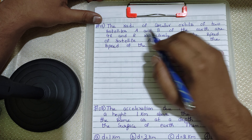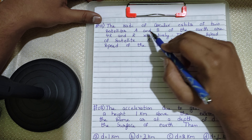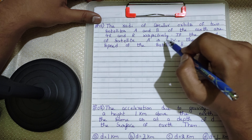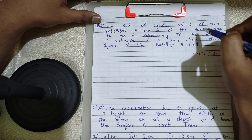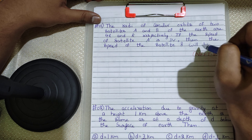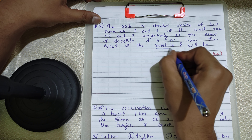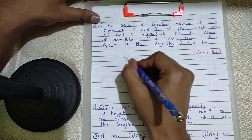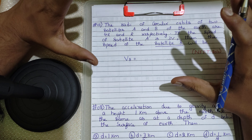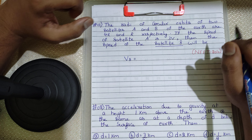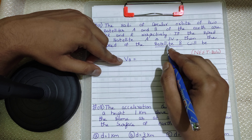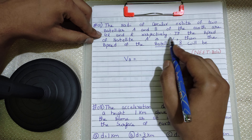The radii of the circular orbits of two satellites A and B of the earth are 4R and R respectively. If the speed of satellite A is 3V, then find the speed of satellite B. We are asked to find the speed of satellite B.